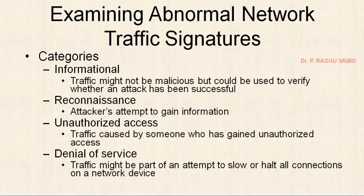Abnormal means which is deviated from the regular behavior — that is called abnormal. In a signature-based intrusion detection and prevention system, this abnormal activity can be identified by comparing the signature. But in case of anomaly-based intrusion detection systems, the abnormal will be identified with the help of outliers. In intelligent techniques, similar types of things will be grouped into a cluster. The ones which are left over — which do not fall in any cluster — may become the outlier, meaning which is not following a regular pattern.